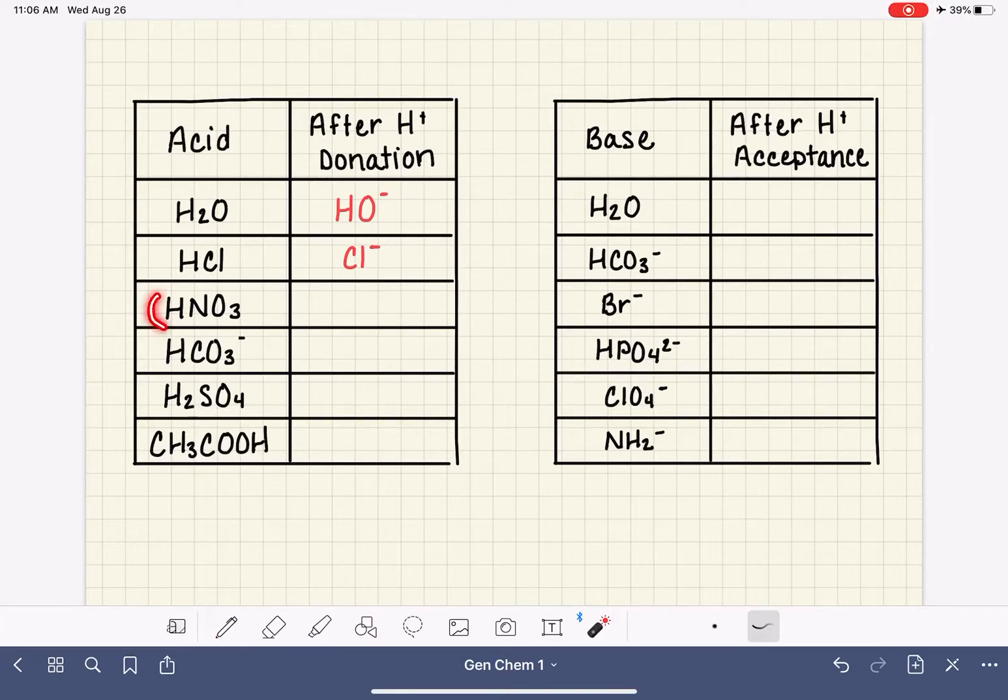Next example, HNO3. We're losing the hydrogen. So we've gone from HNO3 down to NO3. And again, we're losing a positive charge. We're going from zero. Zero minus plus one gives us a negative one charge.